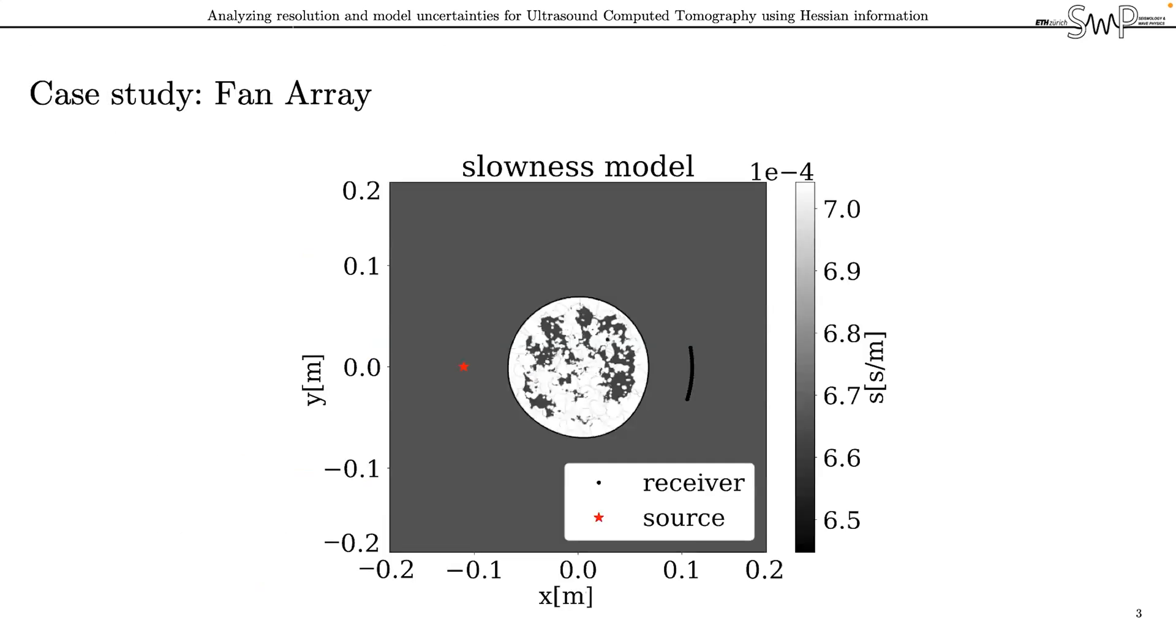Now, let's see how we can use the resolution information in the Hessian in a practical case. Here, we consider a 2D numerical model of a cross-sectional slice through a breast, and you can see that the tissue structure consists of different regions with different slowness values attached to them. For starters, we consider a simplistic transducer array with one source and a set of 20 receivers on the opposite side of the model.